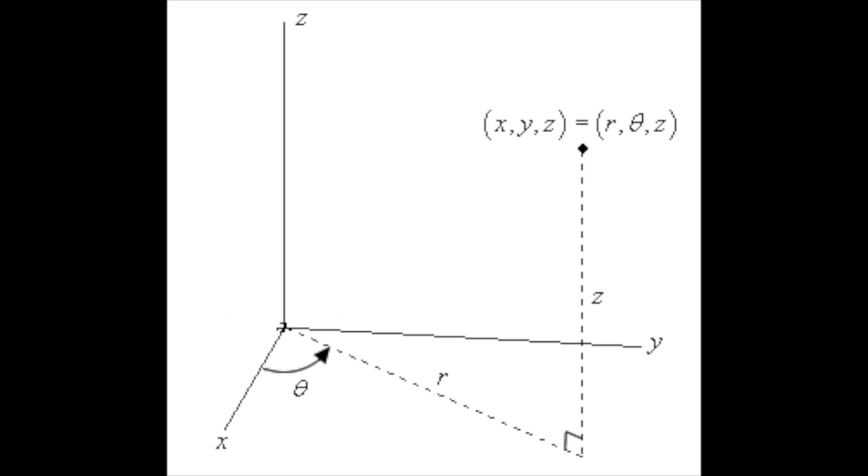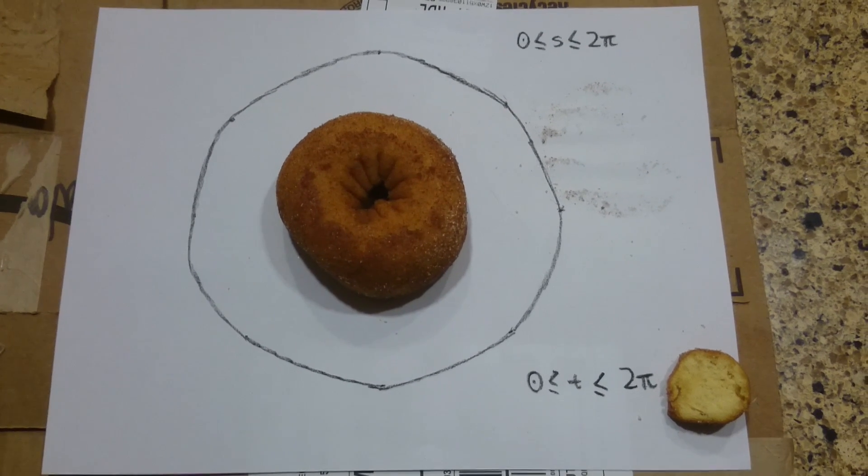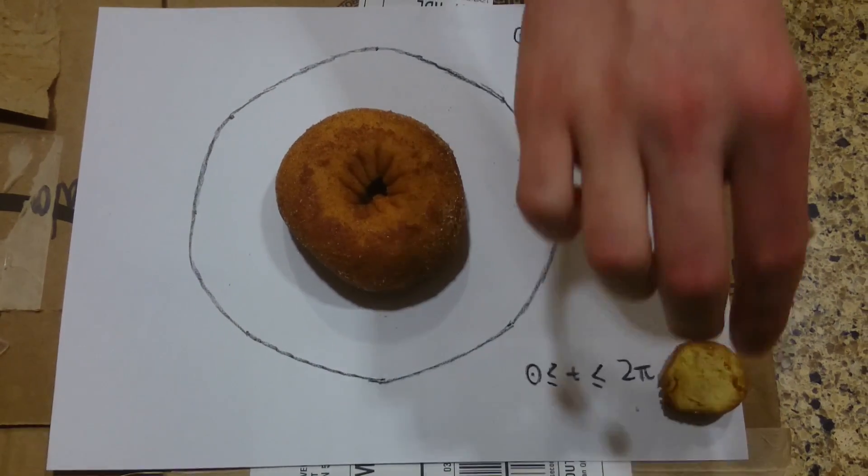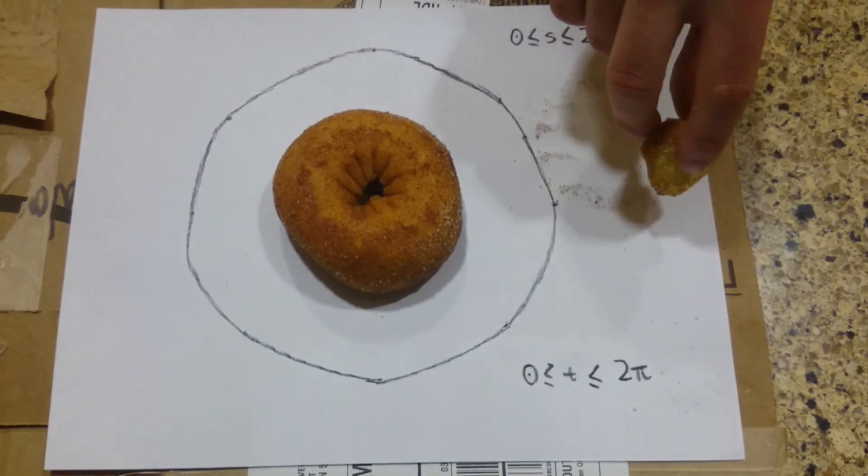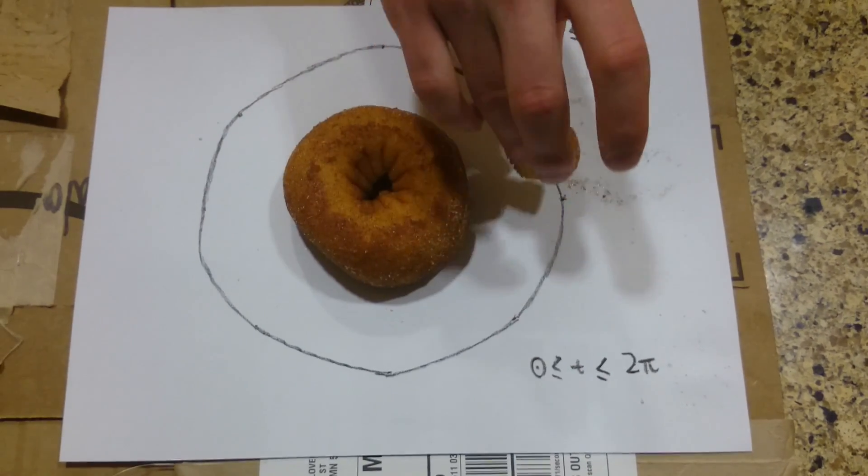Today we'll be using the cylindrical coordinate system, which has a theta, r, and z component. The theta component is very easy for us to parametrize. It is the same thing as the s parameter, which follows the donut slice as it goes around the z-axis. So therefore, theta equals s.